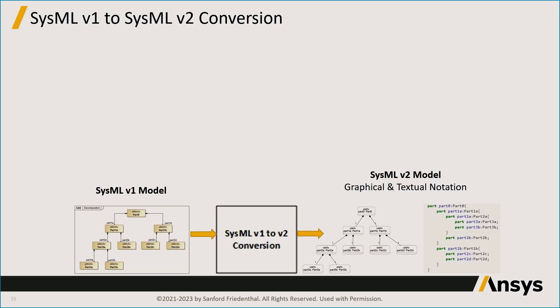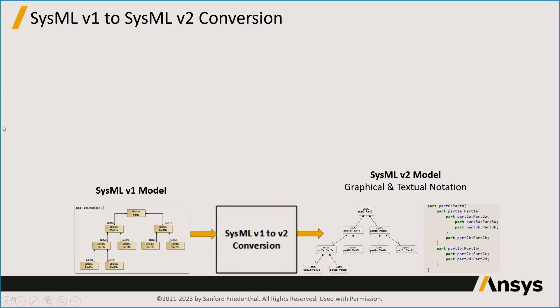Relative to model conversion, if you have an existing SysML v1 model and you're going to convert it to a SysML v2 model, part of this will be automated — the tool vendors should provide a conversion capability — but part of it will be manual. This is the opportunity to improve the quality of that v1 model. You end up with the v2 model showing both the textual and graphical syntax on the right side.